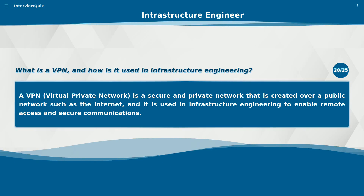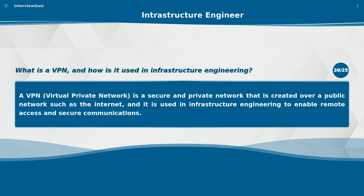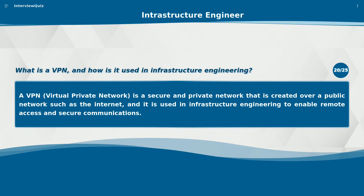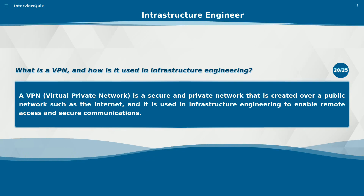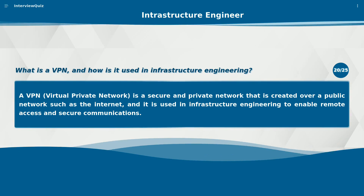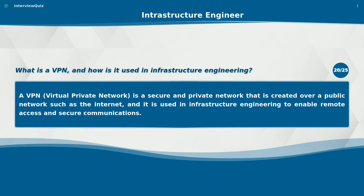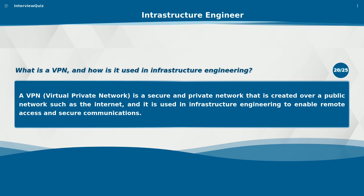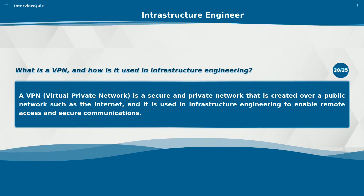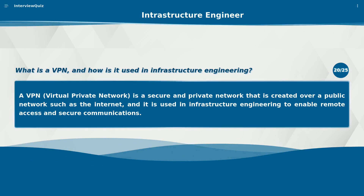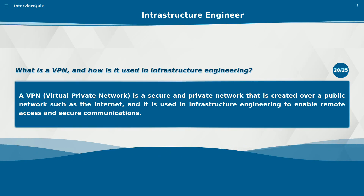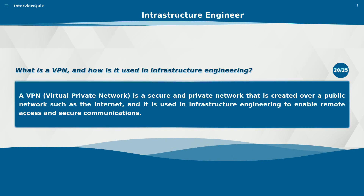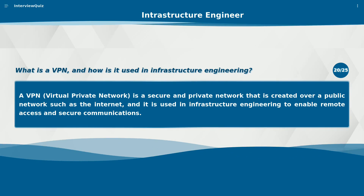What is a VPN and how is it used in infrastructure engineering? A VPN (Virtual Private Network) is a secure and private network created over a public network such as the internet, and it is used in infrastructure engineering to enable remote access and secure communications.